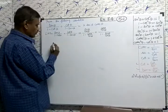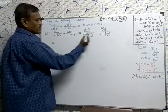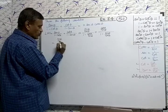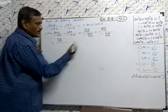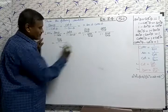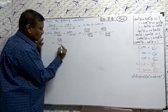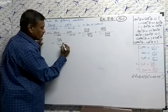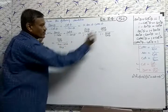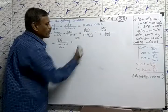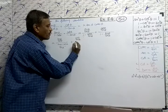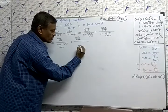Now, taking the LCM in the denominators. For the first fraction, the denominator LCM is sine theta, so cross multiplying gives sine theta minus cos theta. For the second fraction, the LCM is cos theta, giving cos theta minus sine theta.